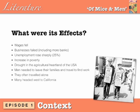Many of them headed west to California, where the weather was fine and there was a higher chance of finding work on ranches and farms. This is where the novel is set, specifically in the Salinas Valley, which is the area shown by the photo at the start of this video.